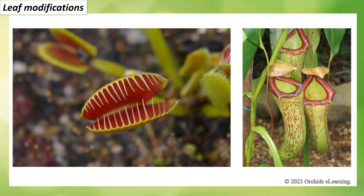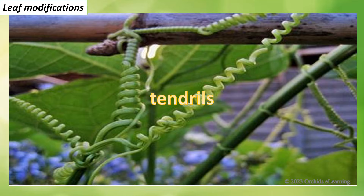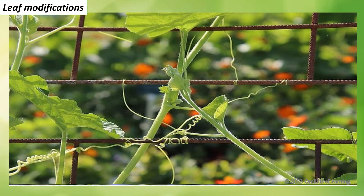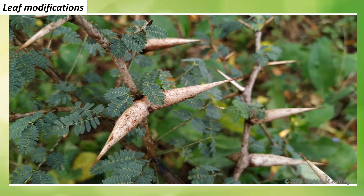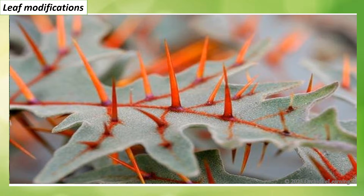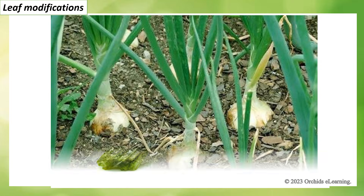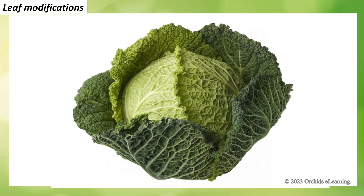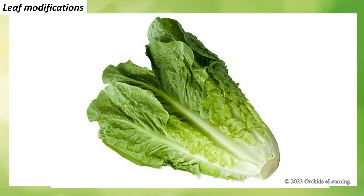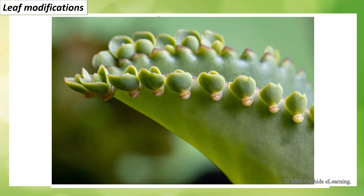Leaf modifications: leaves of some plants are modified to form special structures called tendrils, which help plants to attach themselves to support — plants having tendrils are generally climbers. For protection: leaves of certain plants get modified to form spines, which also reduce the amount of water lost from the plant. Leaves of some plants store extra food and are mostly eaten as vegetables — spinach, cabbage, and lettuce are such leaves. Leaves of bryophyllum have buds that can grow into new plants.